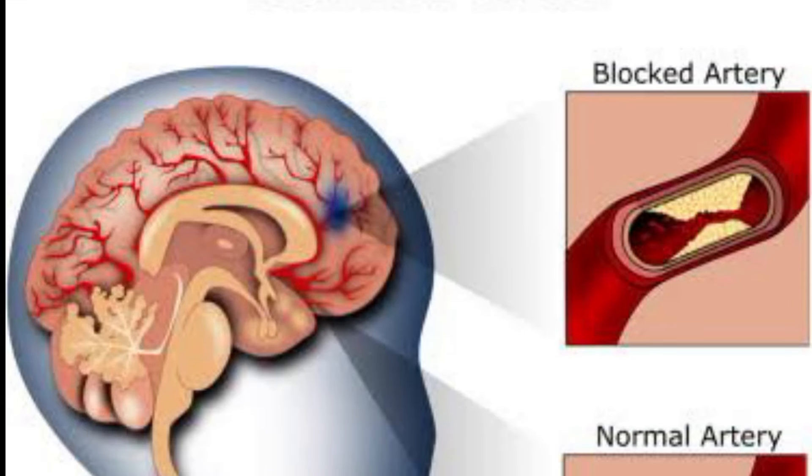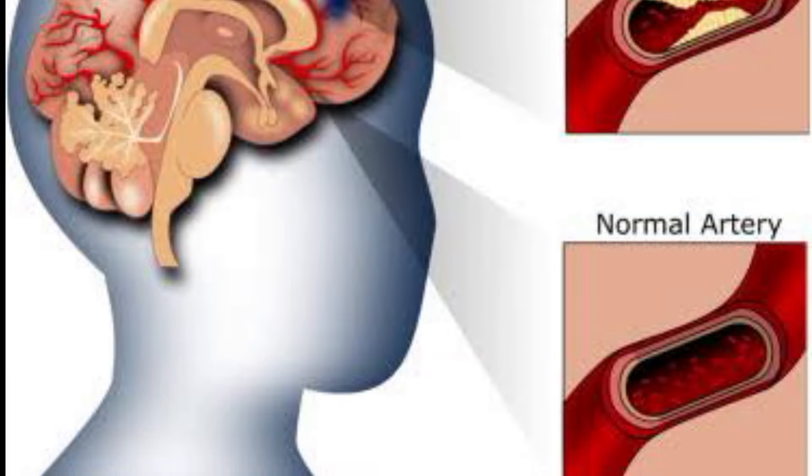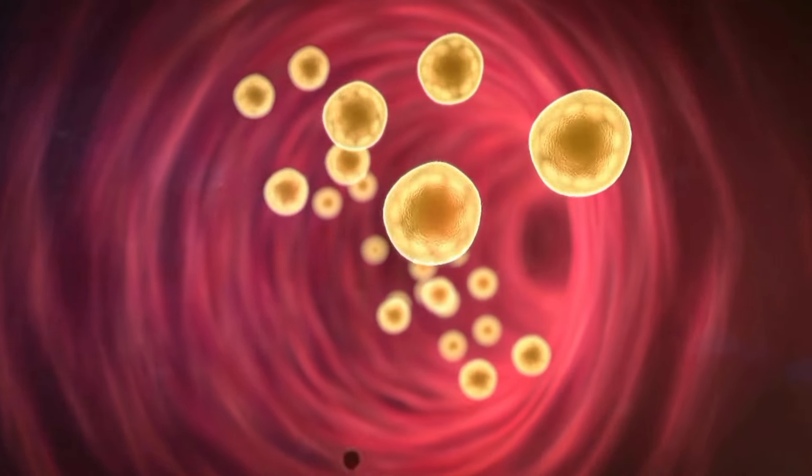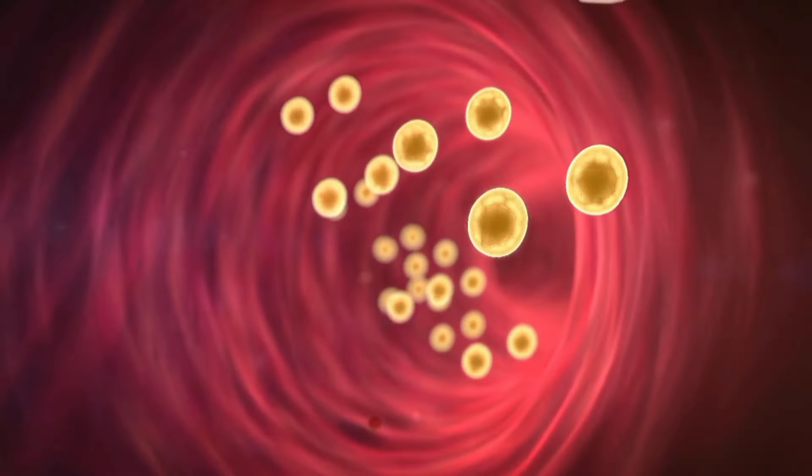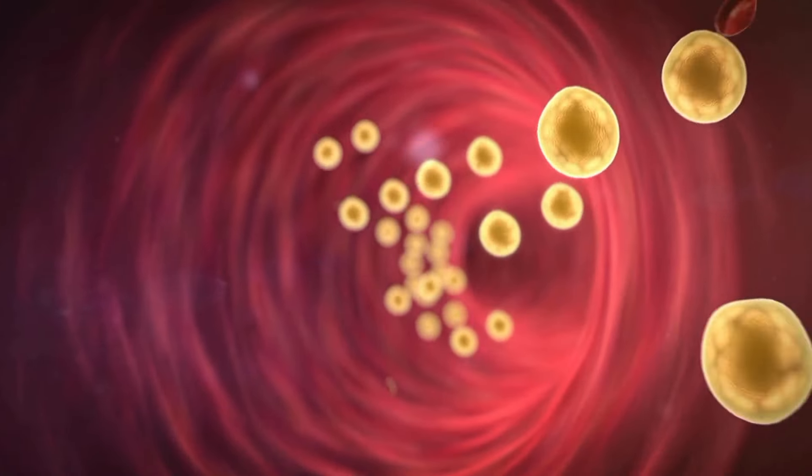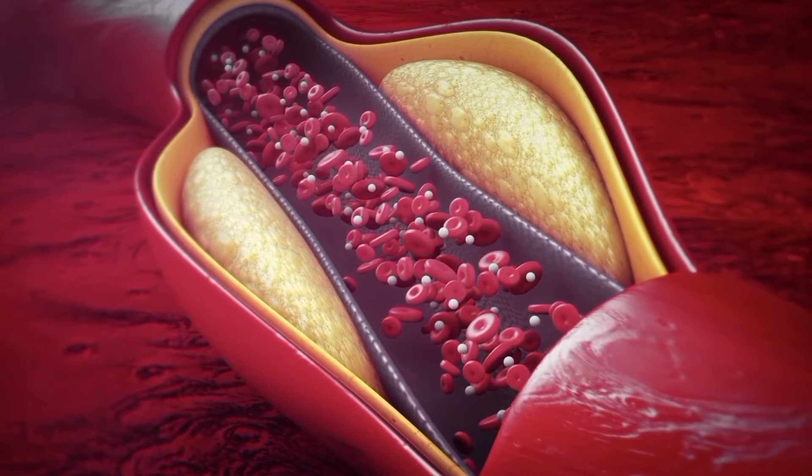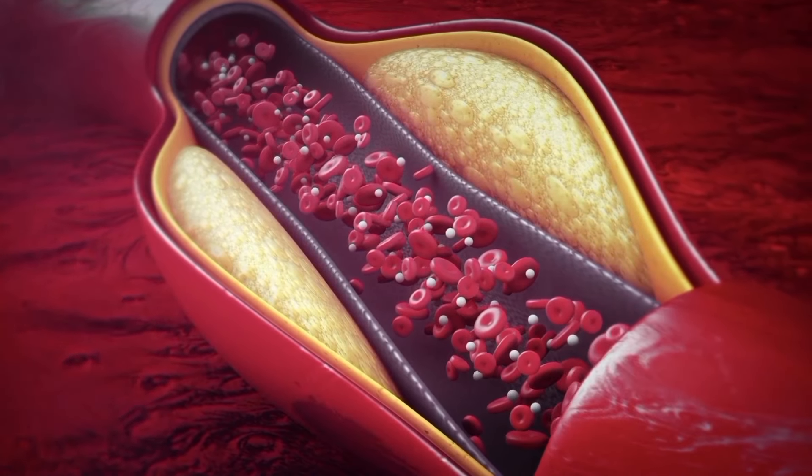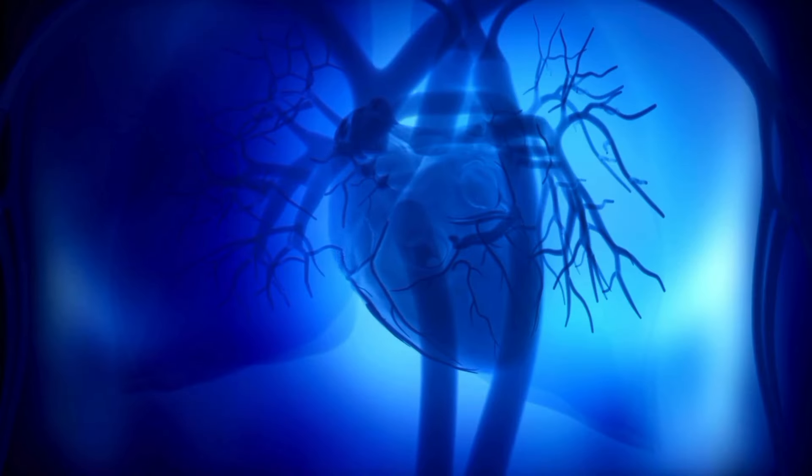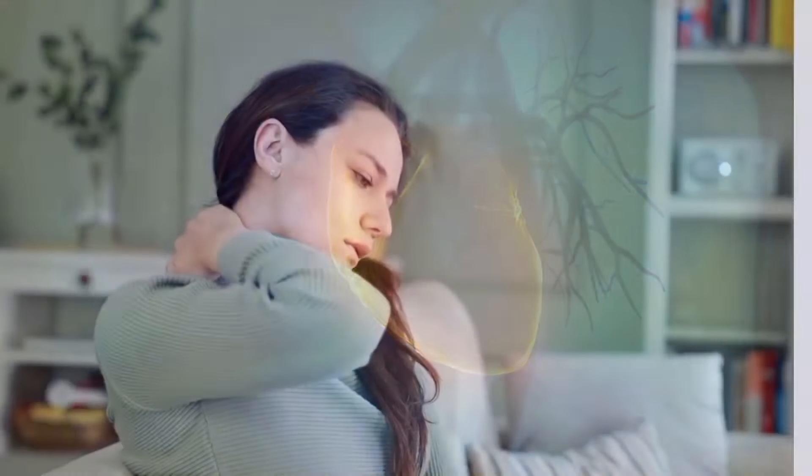Ischemic strokes account for the majority of stroke cases, typically occurring when a blood clot forms and obstructs a blood vessel supplying blood to the brain. These clots can originate within the blood vessels of the brain (thrombotic stroke) or travel from elsewhere in the body, such as the heart or neck arteries (embolic stroke).